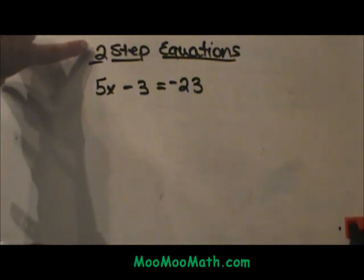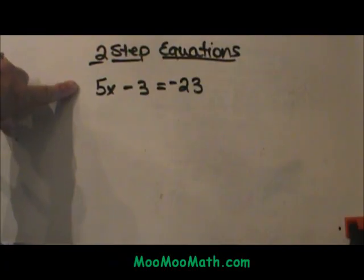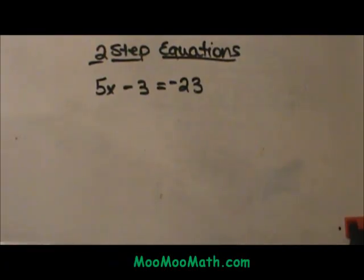Welcome to Moo Moo Math. Today we are going to talk about two step equations. Here is our example: 5x minus 3 is equal to negative 23.